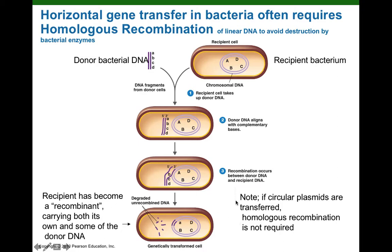As a side note, donor bacteria can also transfer their plasmids to recipients. Plasmids are circular — like little mini chromosomes — so if a donor transfers a plasmid to a recipient, the plasmid doesn't need to insert itself into the chromosome and won't be destroyed, because the bacterial enzymes don't recognize circular DNA as foreign bacteriophage DNA. Donated circular plasmids can simply exist in the cytoplasm of the recipient without being integrated into the chromosome.